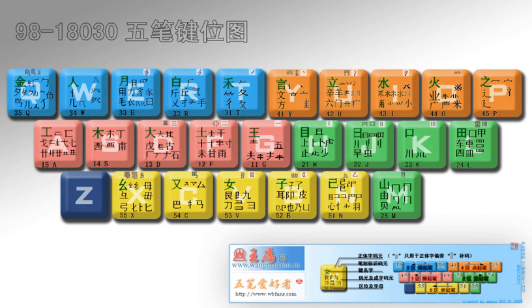In mainland China, the Wubi and Pinyin methods such as Sogou Pinyin and Google Pinyin are the most popular. In Taiwan, Boshiami, Kangxi, and Zhuyin predominate, and in Hong Kong and Macau, Kangxi is most often taught in schools.